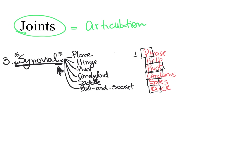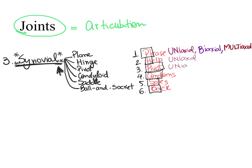Now that we've covered the six types of synovial joints, here's a tip to remember their degree of movement using the mnemonic 'please help pivot condom sails back.' Plane can be uniaxial, biaxial, or multiaxial. Hinge and pivot are uniaxial. Condyloid and saddle are biaxial. Ball and socket is multiaxial. The root 'uni' has three letters, so the first three types are uniaxial; 'bi' has two letters, so the next two are biaxial; and the last one is multiaxial.